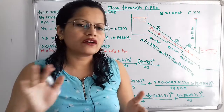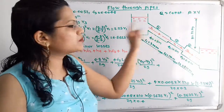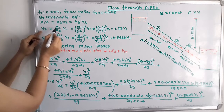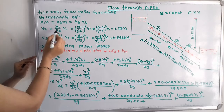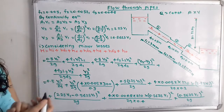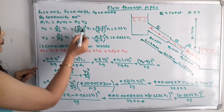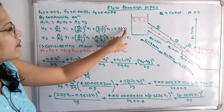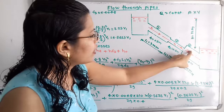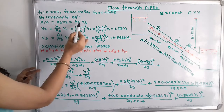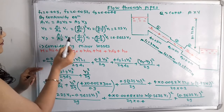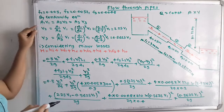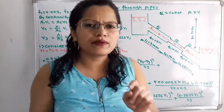Since V1, V2, and V3 are all unknown, we express V2 and V3 in terms of V1. From A1·V1 = A2·V2, we get V2 = (D1/D2)² × V1 = (0.3/0.2)² × V1 = 2.25 V1. Similarly, V3 = (D1/D3)² × V1 = (0.3/0.4)² × V1 = 0.5625 V1.